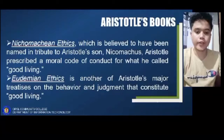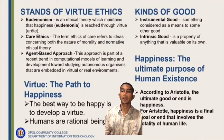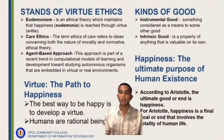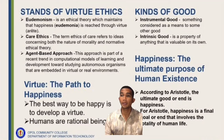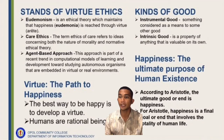We have some of the virtue ethics: eudaimonism, care ethics, agent-based approach, and the path of happiness. Aristotle said that the best way to be happy is to develop virtue, and humans are rational beings. We have the kinds of good — the instrumental good and the intrinsic good — and the ultimate purpose of human existence. According to Aristotle, the ultimate good or end is happiness, a final goal that involves the totality of human life.